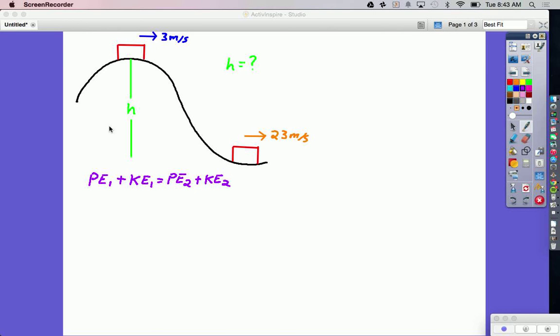So we start off with our conservation of energy equation, which is the initial potential energy and kinetic energy of the object at the first location is going to be equal to the potential energy and kinetic energy of the object at the second location.